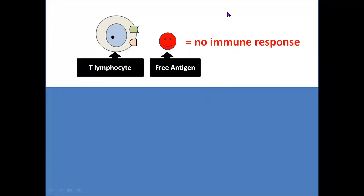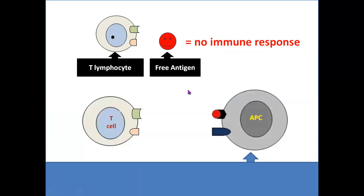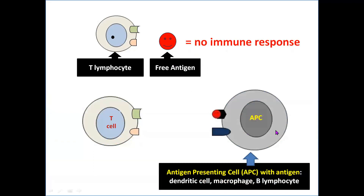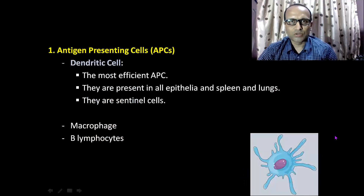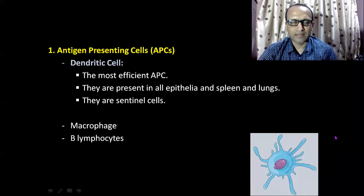In this illustration, you can see a free antigen in front of a T-lymphocyte, but there will be no immune response because T-lymphocytes do not react to free antigen. But when the antigen is presented by an antigen-presenting cell to T-lymphocytes, there will be immune response. To understand immune response against an antigen, we should have some knowledge about antigen-presenting cells and T-lymphocytes.